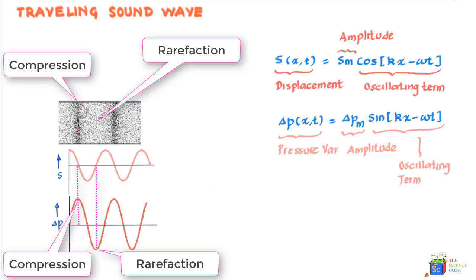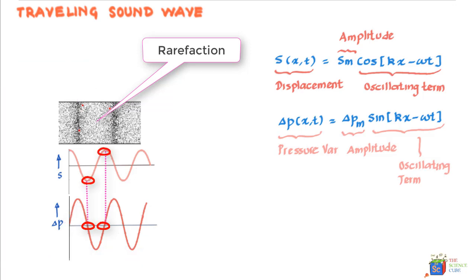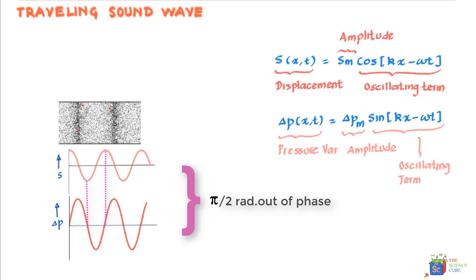You will also observe that the pressure differential becomes zero when the particle displacement is at the max. And finally, you would have already observed that the displacement and pressure variations are π/2 radians out of phase.